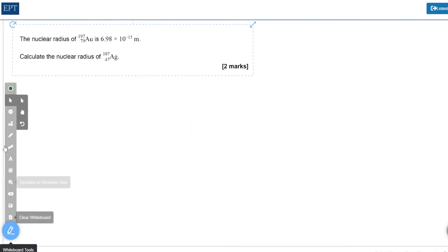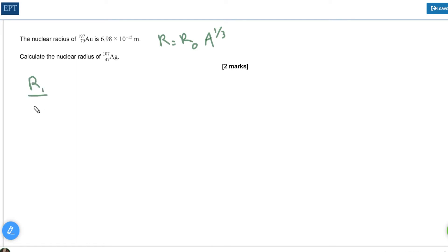In part 5.5 we are asked to calculate the nuclear radius of silver, Ag. We recall the formula that r equals r0 A to the third, where r0 is a constant and A is the nuclear number. Because r0 is a constant we can say that r1 over A1 to the third equals r2 over A2 to the third.